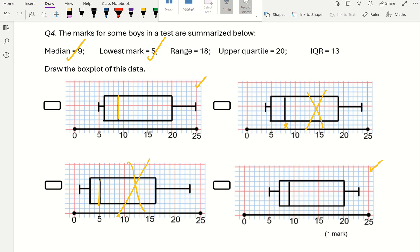Then it says the range is 18. The range is the highest take away the lowest. The highest is 25 and the lowest is 5, so that means the range is 20, so that's definitely out.